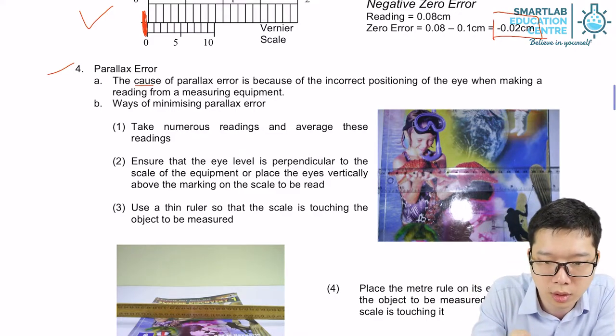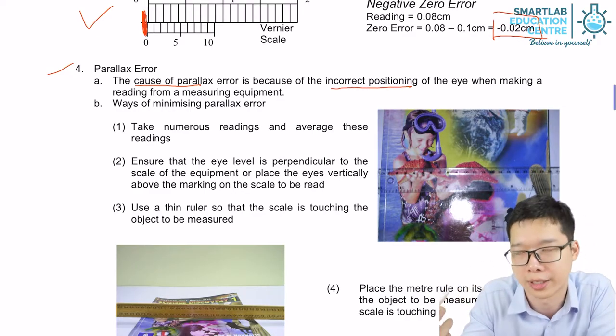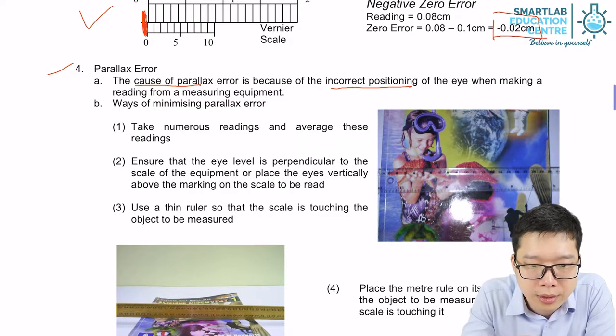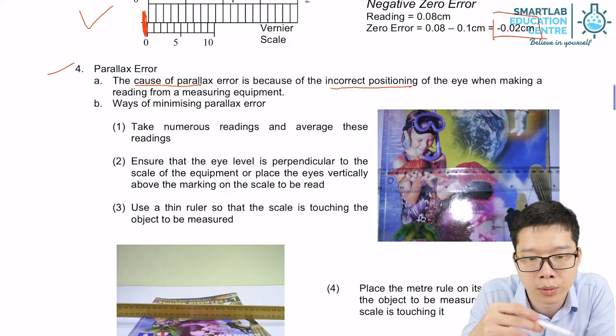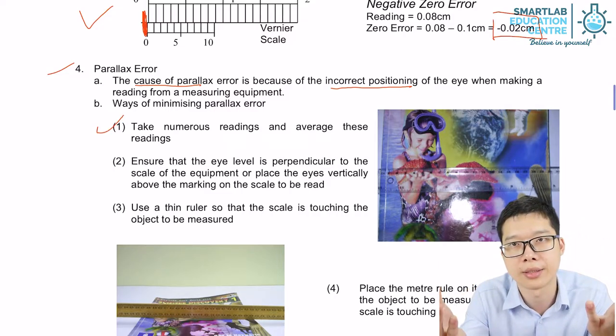So that is about parallax error. As we mentioned, the cause of parallax error is because of the incorrect positioning of your eye. You must be perpendicular upwards. So there are ways to minimize the parallax error.